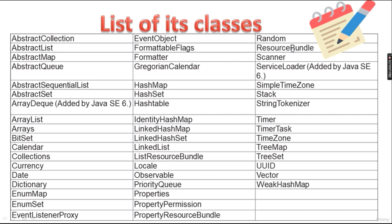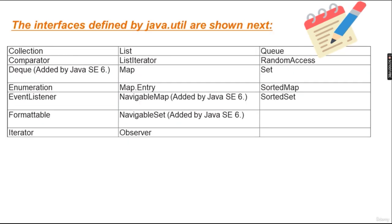The interfaces defined by the java.util package include: Collection, Comparator, Deque (added by Java 6), Enumeration, EventListener, Formatable, Iterator, List, ListIterator, Map, Map.Entry, NavigableMap (added by Java 6), NavigableSet (added by Java 6), Observer, Queue, RandomAccess, SortedMap, and SortedSet.